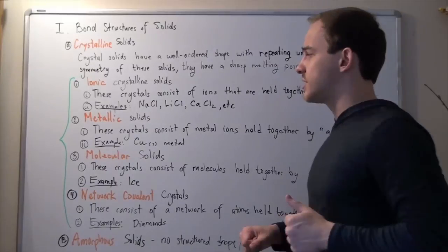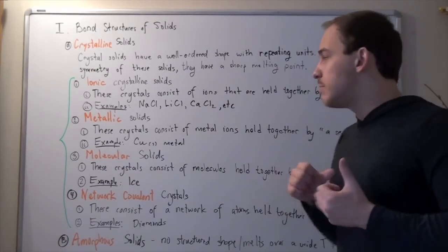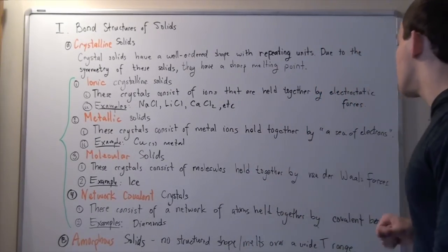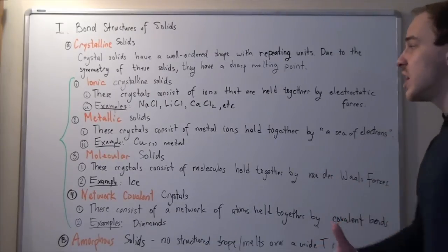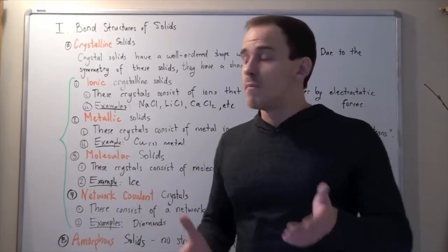Let's look at metallic crystals. These consist of single metal atoms held together by a sea of electrons. Examples include any type of alkali metal or alkaline earth metal.